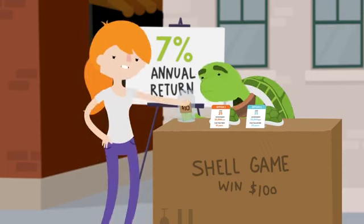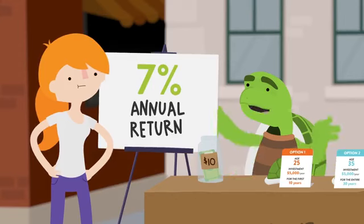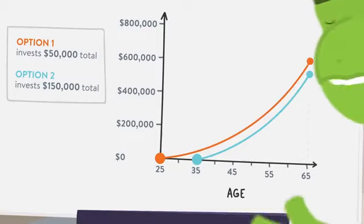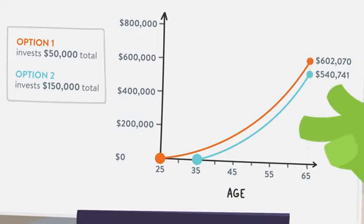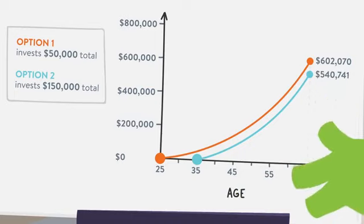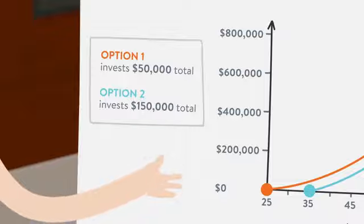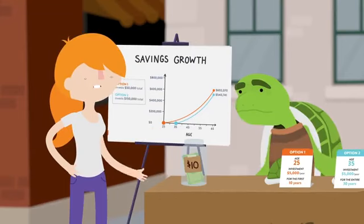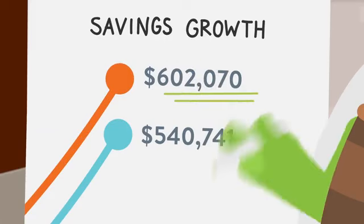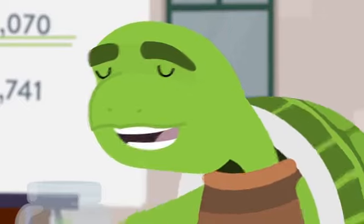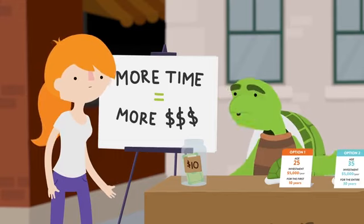I'm sorry. Hold it — it's not the right answer. When you're working with compound interest, $50,000 invested earlier in your life will make you more money than $150,000 invested later in your life. But in option two I'm putting in $100,000 more. Right, but option one will still outperform it by 60 grand. That's crazy. That's compound interest, baby.